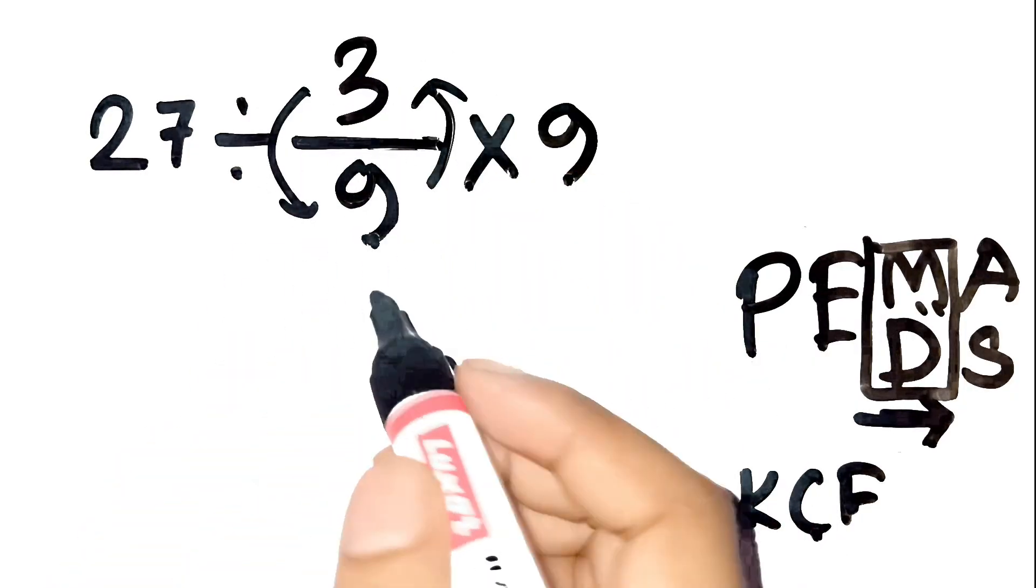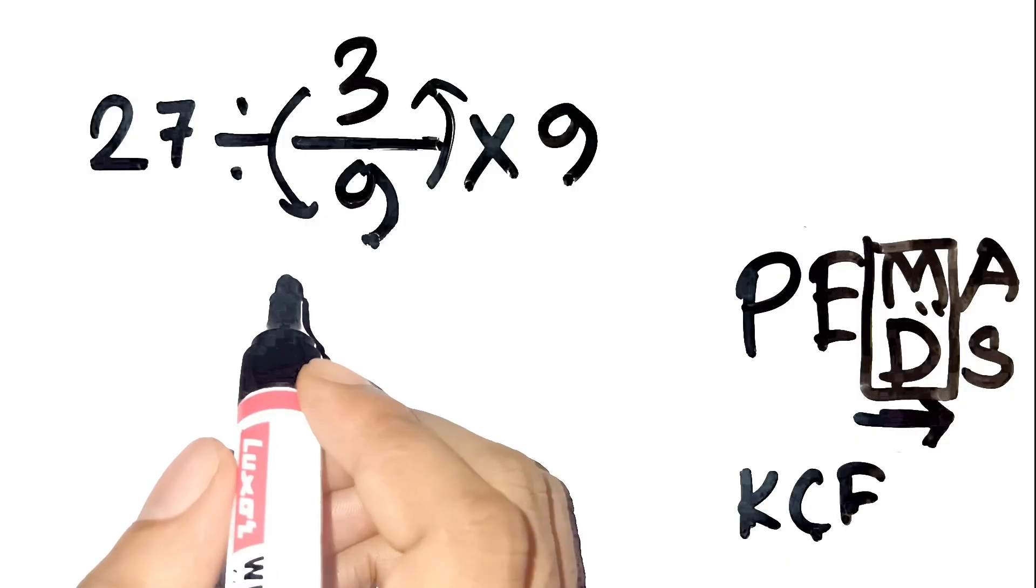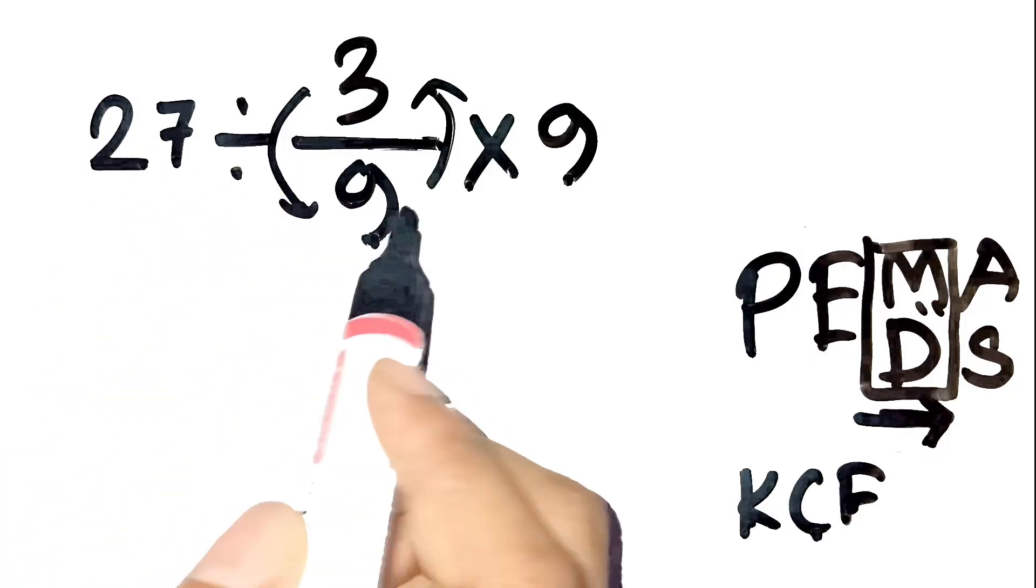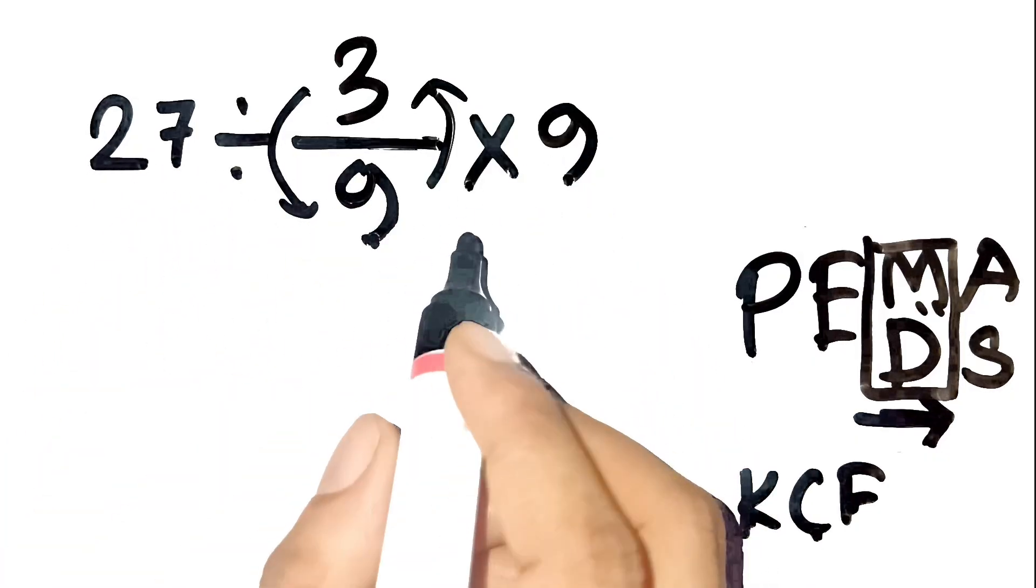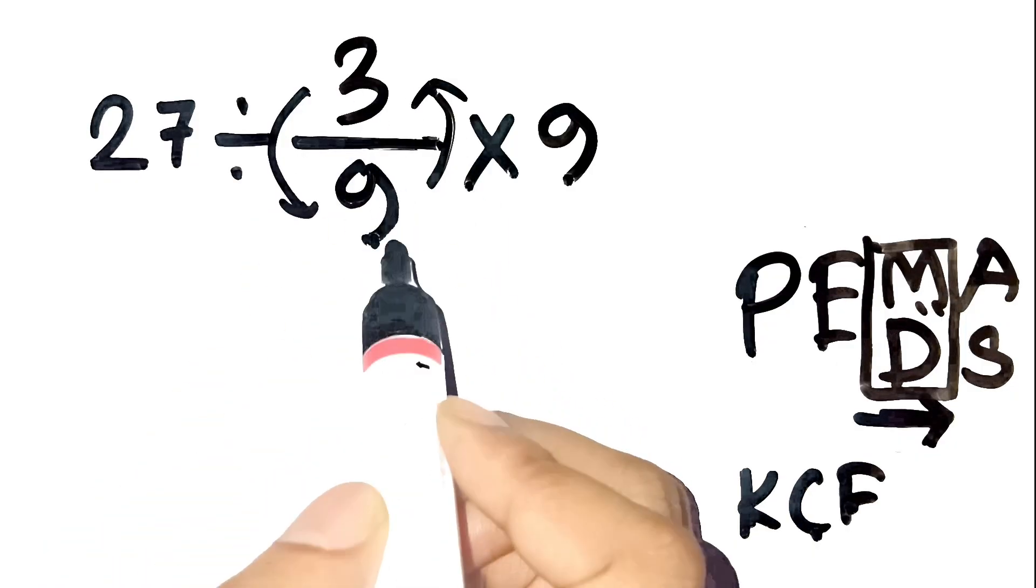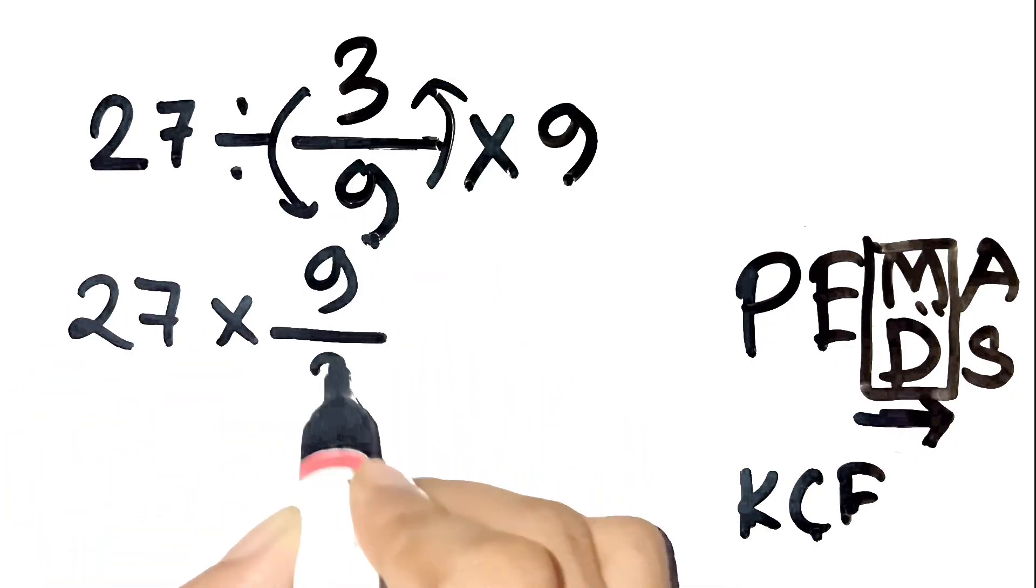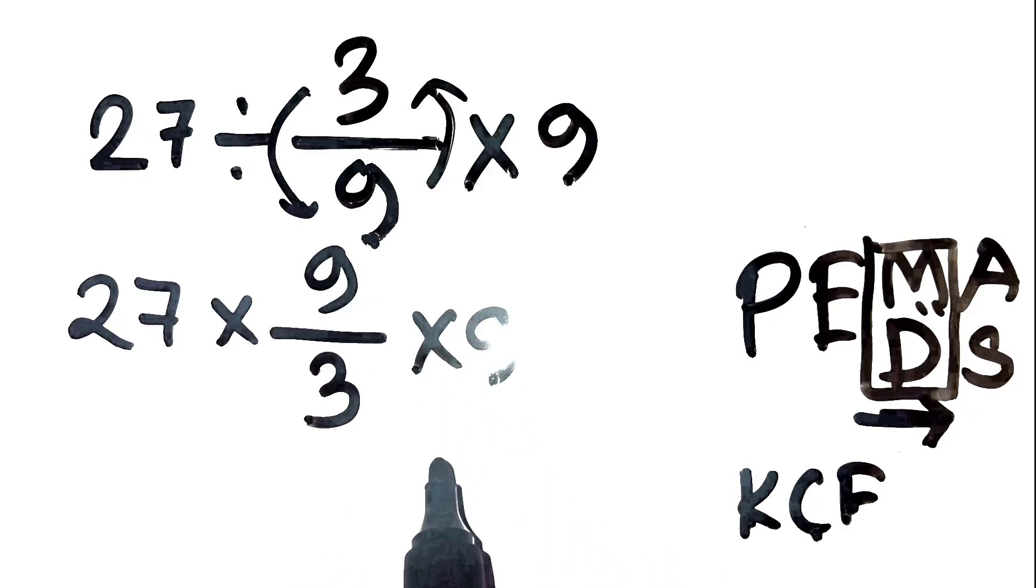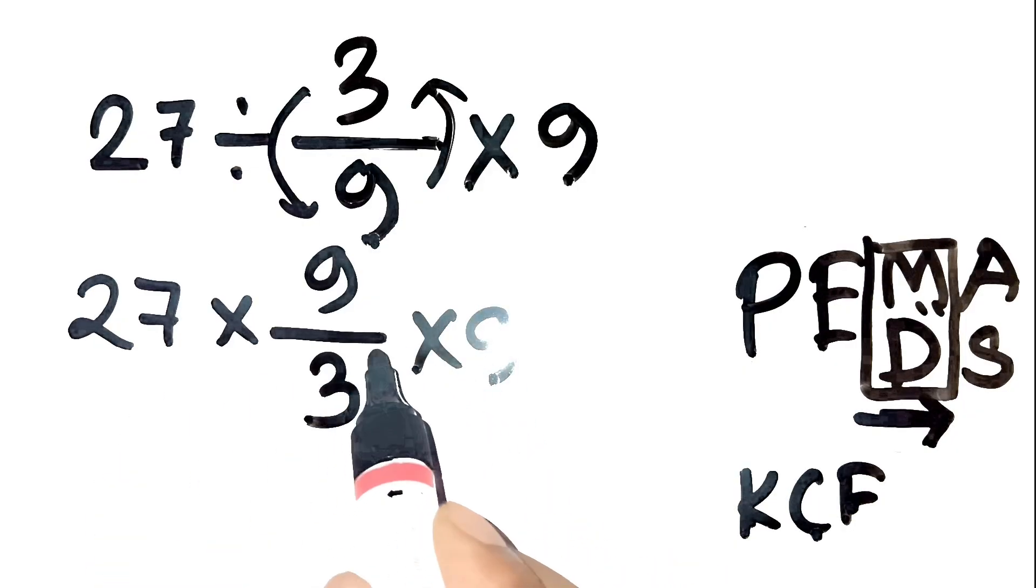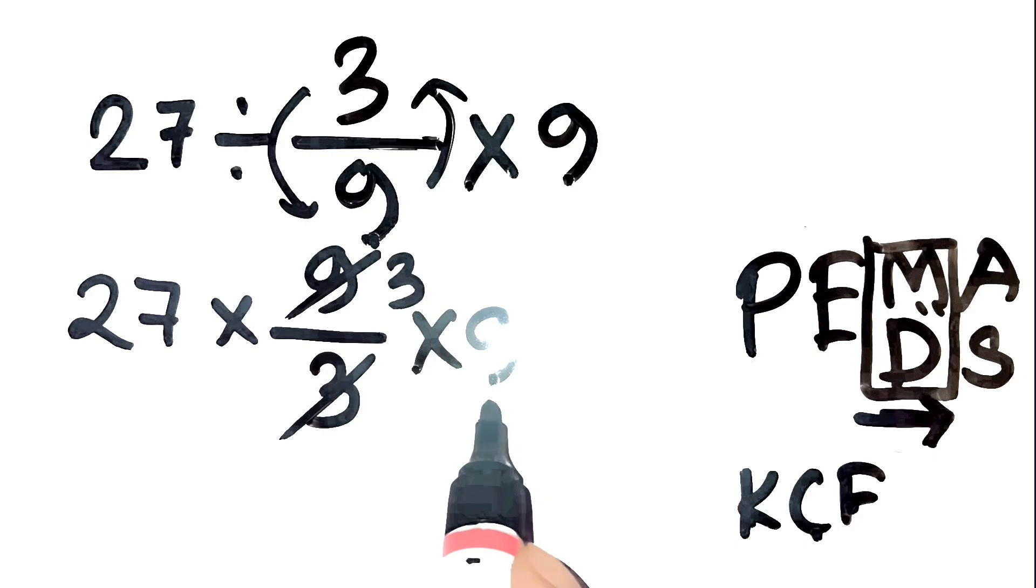Okay, now let's do it step by step. Original problem, 27 divided by 3 over 9 times 9. Step 1, apply KCF to the division by the fraction. So we get 27 times 9 over 3 times 9. Step 2, simplify 9 divided by 3 first. So we get 27 times 3 times 9.